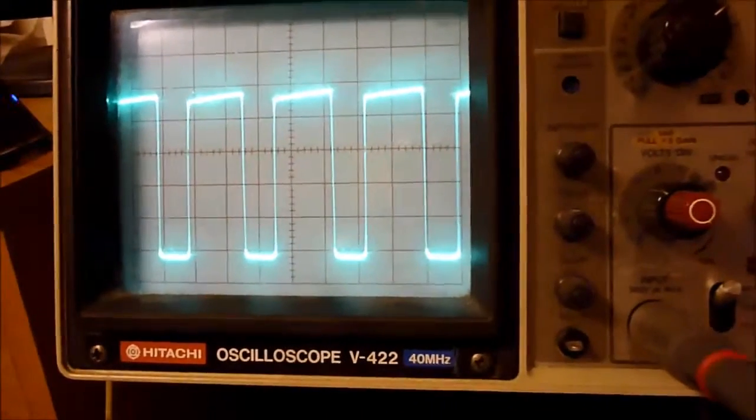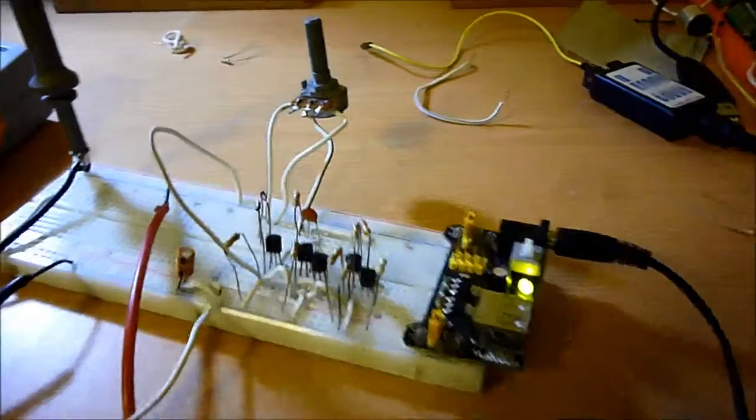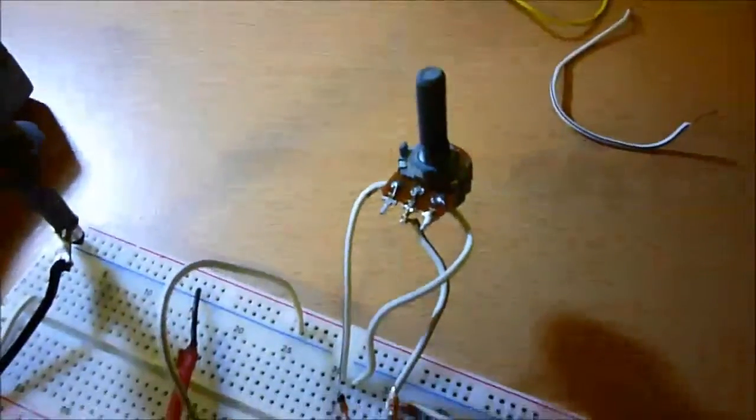So I'll just change over to my variable pulse width modulation. Here I've replaced one of the timings—well, actually I haven't even replaced anything, I've added in two diodes like so, and a potentiometer. By varying that, you can vary the pulse width that is displayed on the screen.